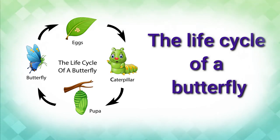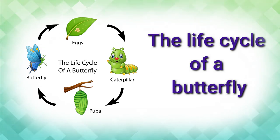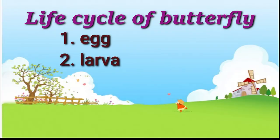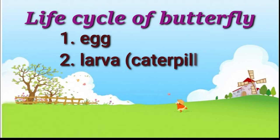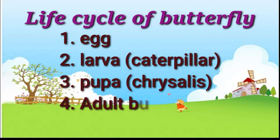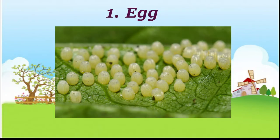Hello everyone, welcome! In this video we are going to learn the life cycle of a butterfly. Butterflies have four different stages in their life cycle: egg, larva, pupa, and adult butterfly. Let us see them one by one and what changes take place in each stage.